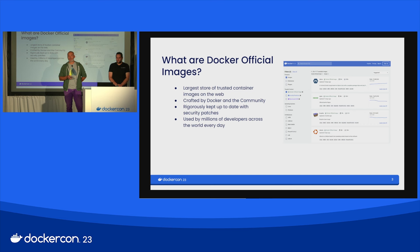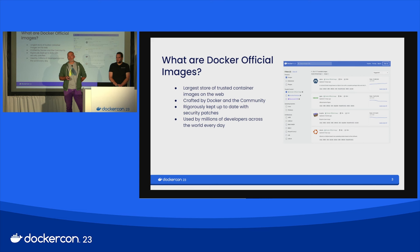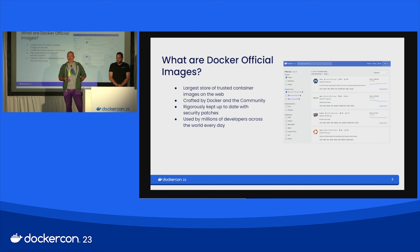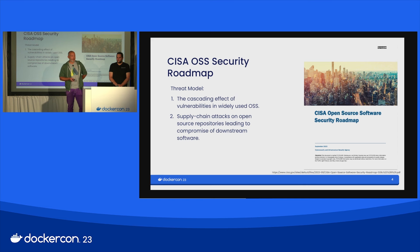So what are Docker official images? Most people here should know what they are — you're at DockerCon. But probably the most important thing to mention is that it's one of the largest sources of open source packages in the world, if not the largest. There are 150 repos across many platforms and architectures. So securing the supply chain of Docker official images is really important to Docker and to the community who help maintain them.